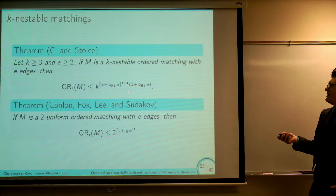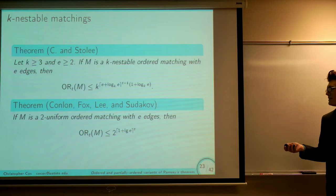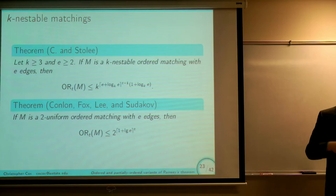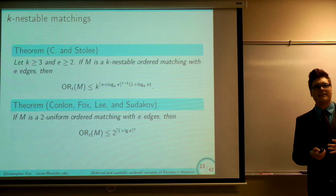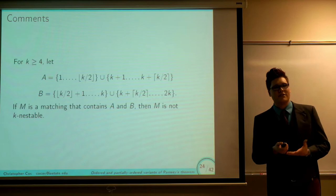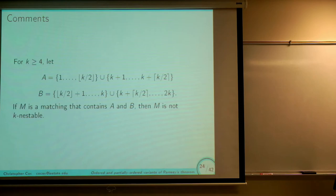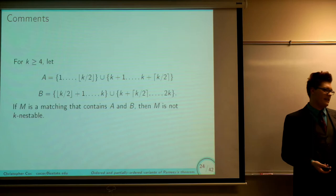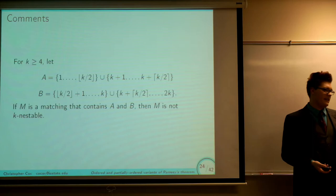Putting everything together, the ordered Ramsey number of any K-nestable ordered matching is at most a certain bound. Comparing to the Conlon-Fox-Lee-Sudakov bound, this is actually much larger in terms of edges — exponential rather than quasi-polynomial — because even simple KR-nested matchings can't be embedded into smaller copies of G_s^K; you need at least a linear amount. Most ordered matchings are not K-nestable once K is at least 3 or 4, since edges with complex crossing patterns can't be K-nested. If you randomly place a few edges, you'll likely get something that is not K-nestable.